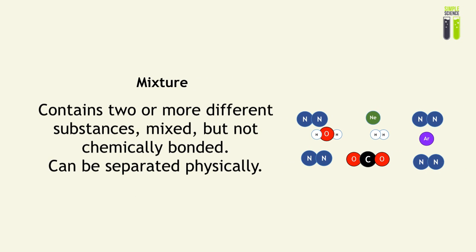And let's look at a mixture. What is a mixture? It contains two or more different substances. They are mixed but not chemically bonded. For example, nitrogen gas and water and neon and carbon dioxide form a mixture if we were to mix them together. See, there is no chemical bond between them.